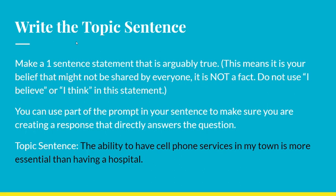The topic sentence I wrote is: 'The ability to have cell phone services in my town is more essential than having a hospital.' This is effective because I've made my claim that cell phones are more important than hospitals in my town — key details from the writing prompt are included to make sure I'm effectively answering it, rather than saying something vague like 'I think cell phones are really important.' The writing prompt asked compared to hospitals, so that's why I included that detail.